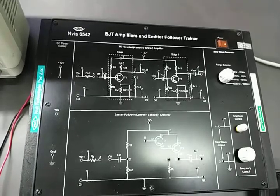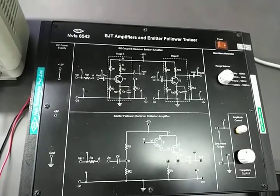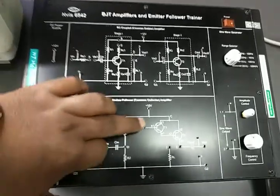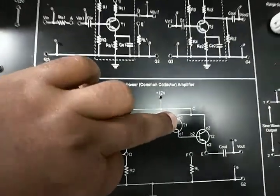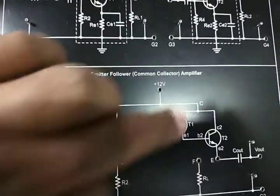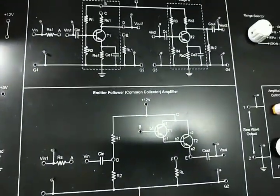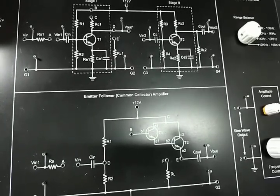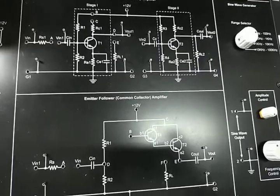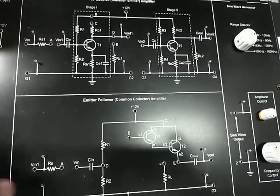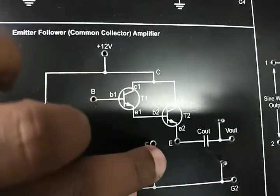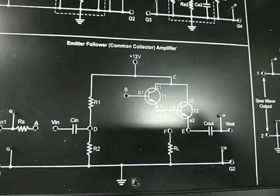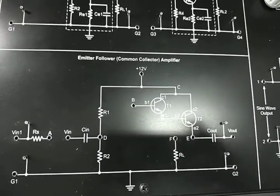If we take the output from the collector, our output signal will be 180 degrees phase shifted to the input signal. If we take the output from the emitter, our output signal will be in phase with the input signal.